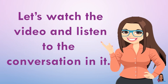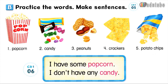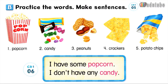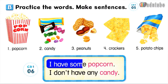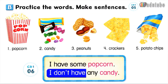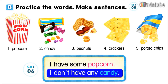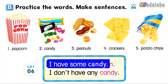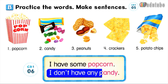Let's watch the video and listen to the conversation in it. B. Make sentences. Number one: I have some popcorn. I don't have any candy. Number two: I have some candy. I don't have any peanuts.